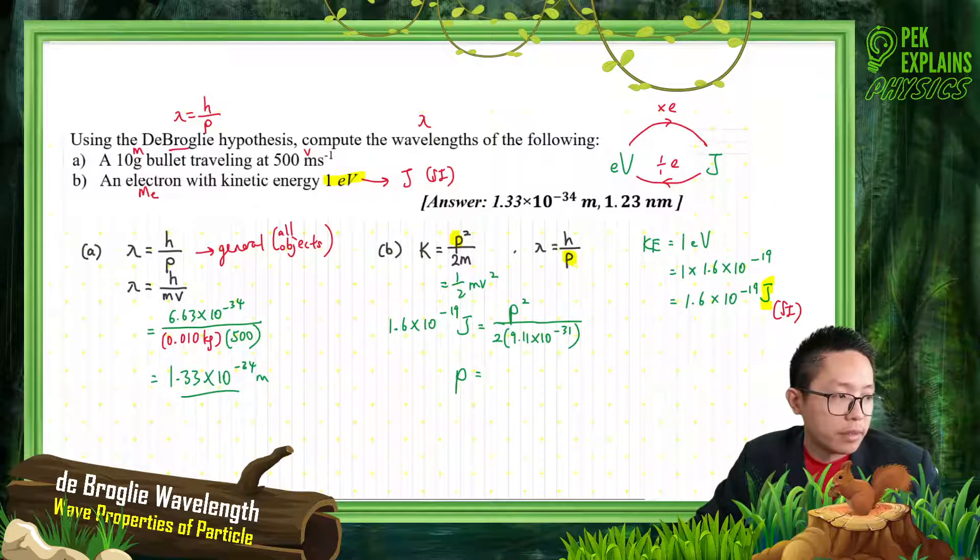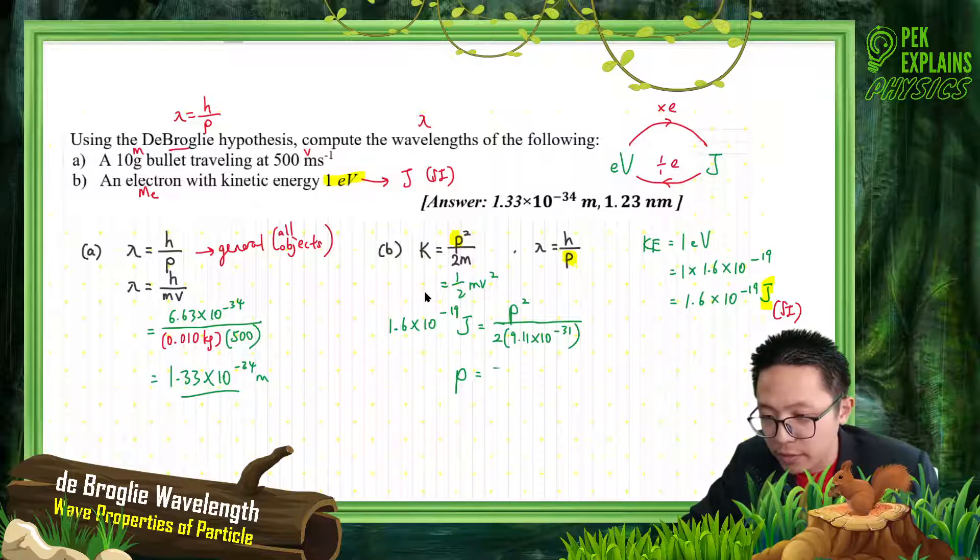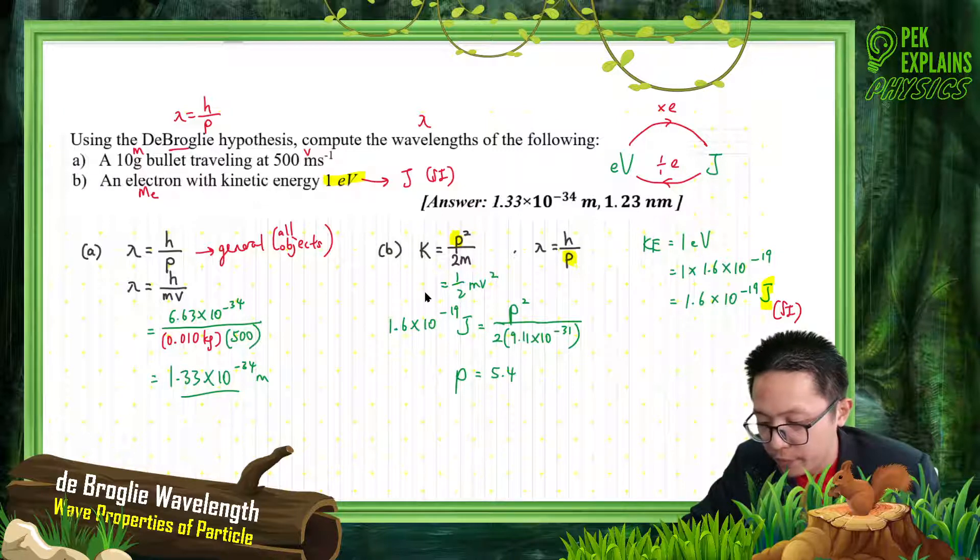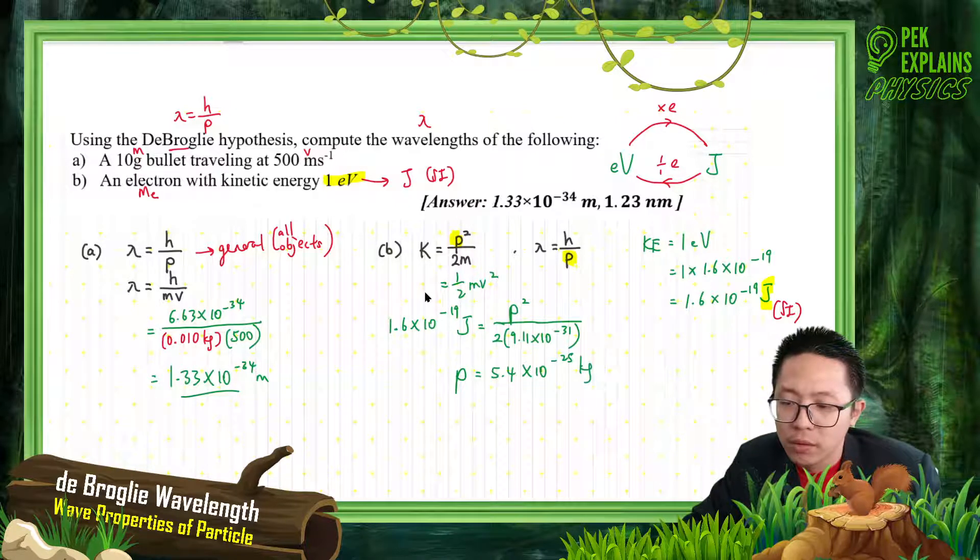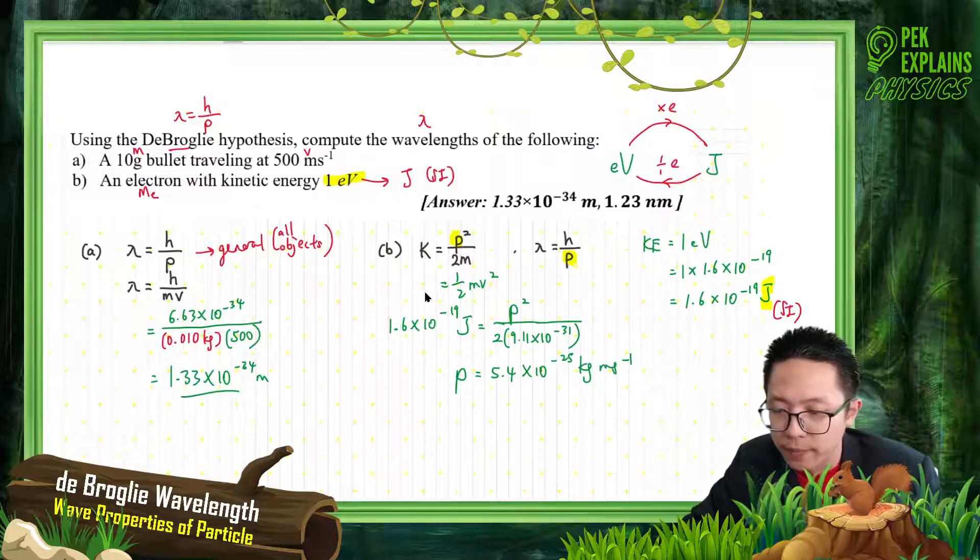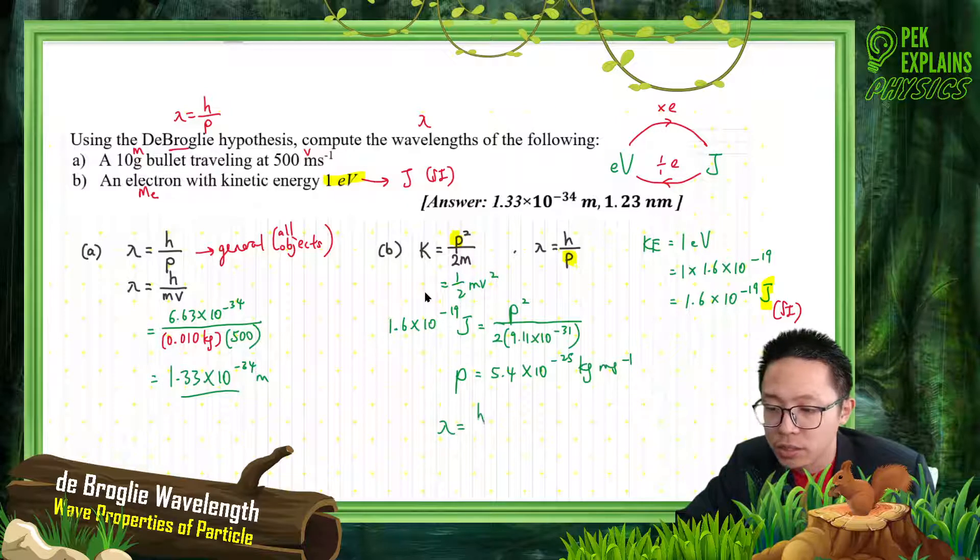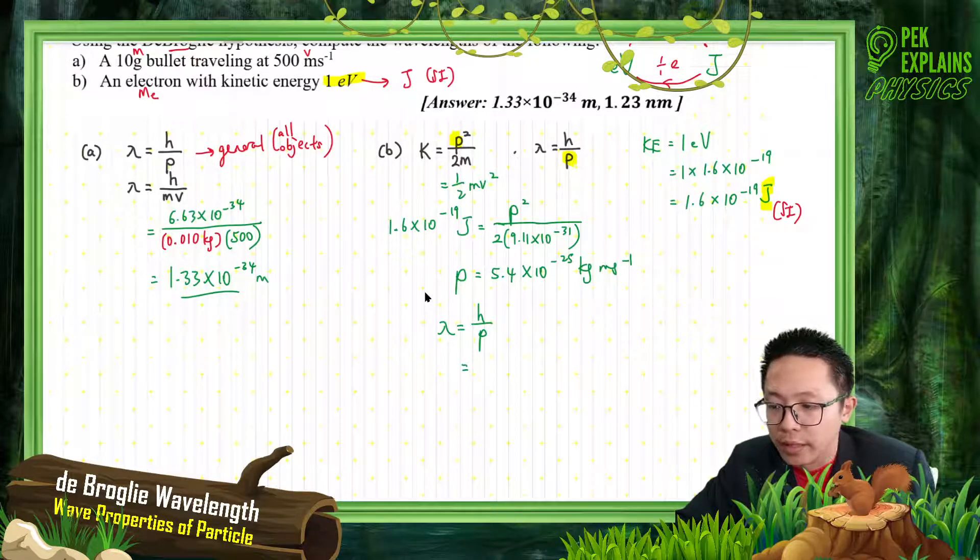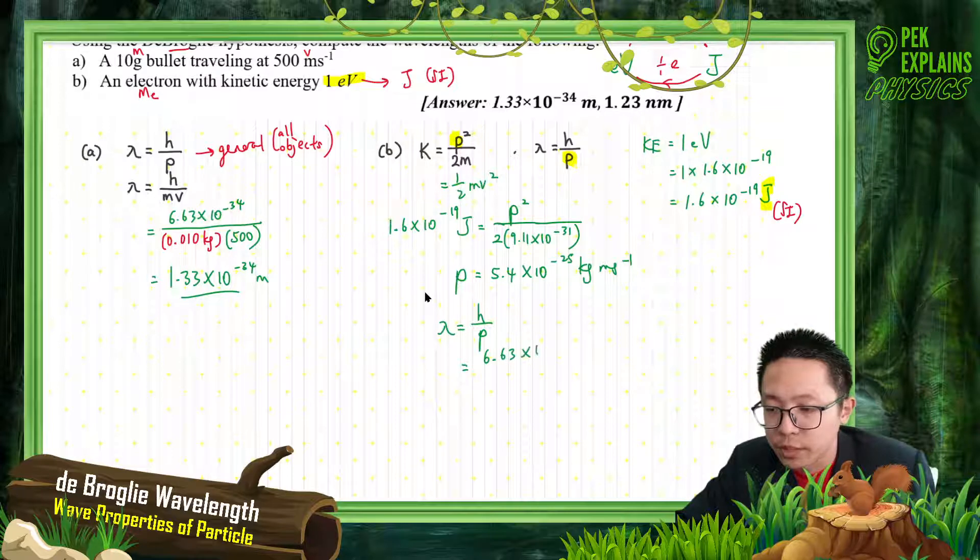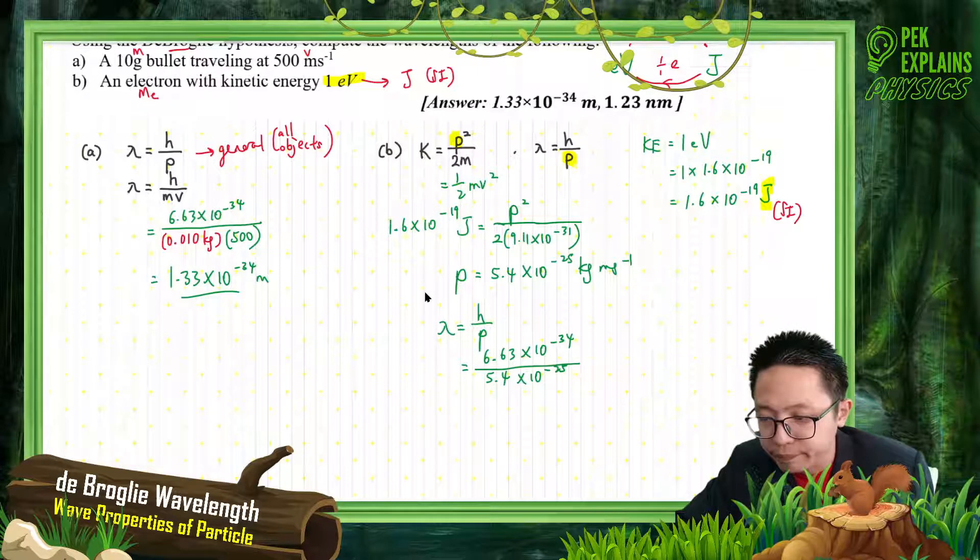I calculated it is 5.4 exponent negative 25. This momentum is kilogram meter per second because it's mass times velocity. I got the momentum ready. Now I can find the lambda straight away. Lambda is H over momentum. I can find the wavelength already: 6.63 exponent negative 34 divided by momentum is 5.4 exponent negative 25.